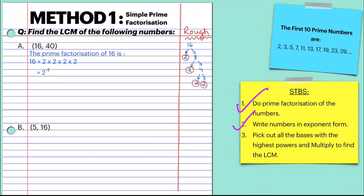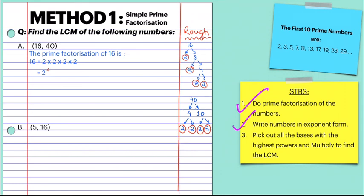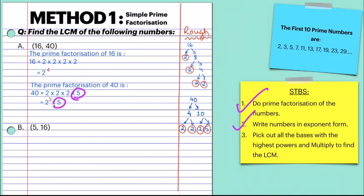Now let's do prime factorization of 40. Break down 40 in the rough column. The prime factorization of 40 is 2 into 2 into 2 into 5. Write it in exponent form: 2 appears 3 times, so we write 2 to the power 3. The 5 appears only once, so we write just 5. You can write it as 5 to the power 1, but it is not necessary — you can write 5 directly.